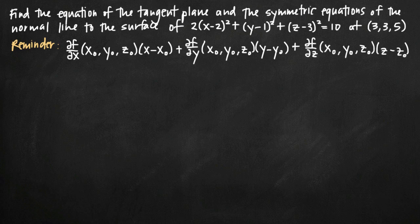Today we're going to be talking about how to find the equation of the tangent plane and also the symmetric equations of the normal line to the given surface. In this particular problem, we've been given the surface 2 times the quantity (x-2)² plus (y-1)² plus (z-3)² equals 10, and we've been asked to find the tangent plane and the normal line at the point (3, 3, 5).